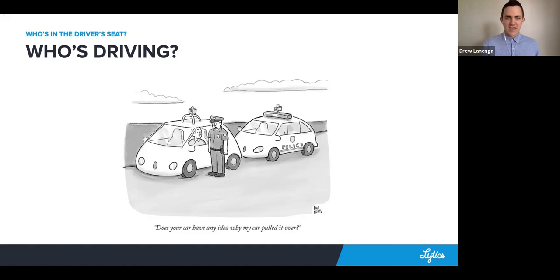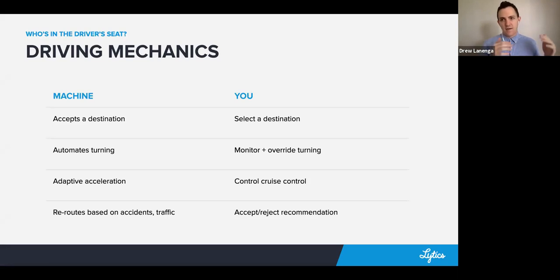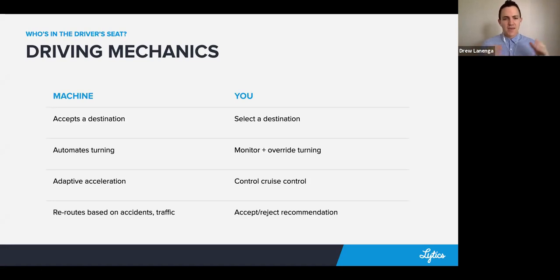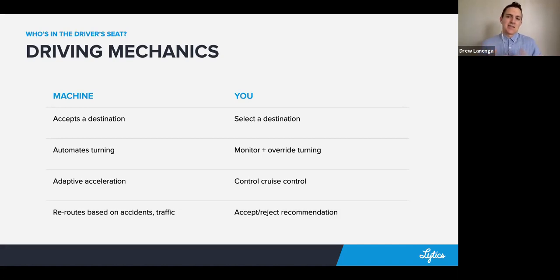We'll use this example to illustrate what that machine-human interaction model looks like in autonomous vehicles, but also in marketing. In today's autonomous vehicles, we're not talking about full autonomy — you can't get in and get to your destination with zero interactions or zero overrides. The interaction model is that you, as a human, provide the destination, and that machine then accepts the destination. If you can't select the destination, it's not your vehicle.